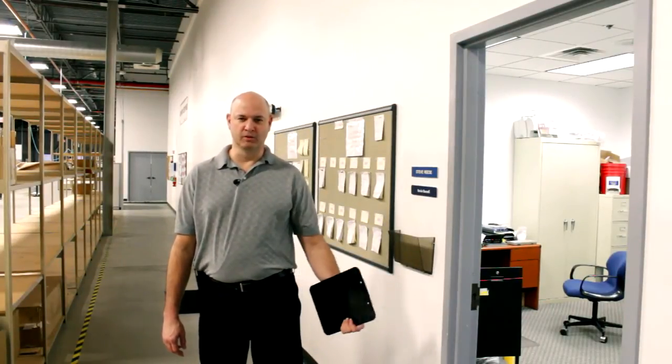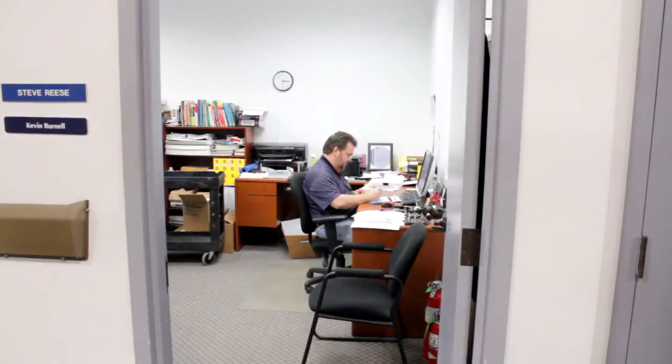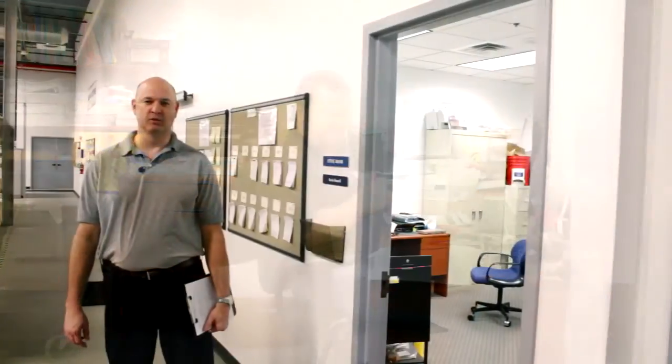Once out into the production floor the first office you come to, it'll be on your right, is that of our production manager and our head of quality. Both individuals reside out of the same office with the intent that we can ensure that both manufacturing and quality are always in direct communication with each other and ensure that any issues that arrive get addressed immediately.